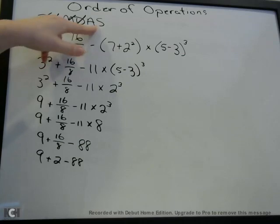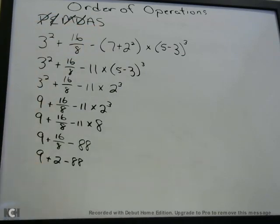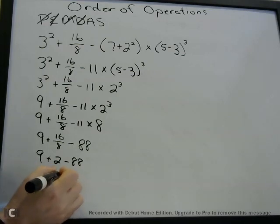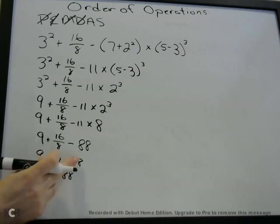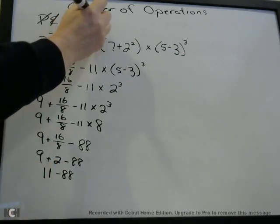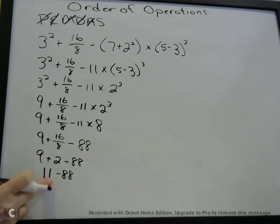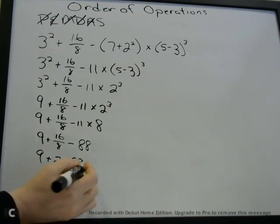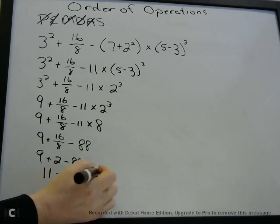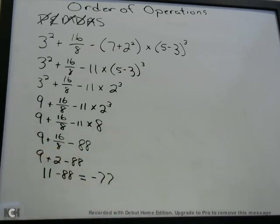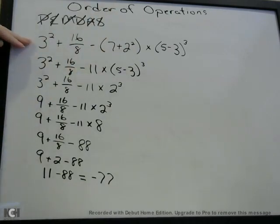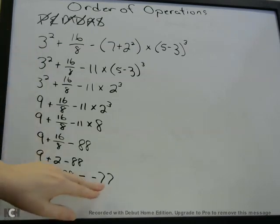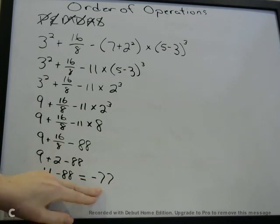Next we have addition — A. 9 plus 2 is 11, minus 88. So now we're done with addition. We're finally to subtraction. 11 minus 88 equals negative 77. And so that is the answer to our problem. This big, long mathematical expression is equal to negative 77 — that is the answer to this question.